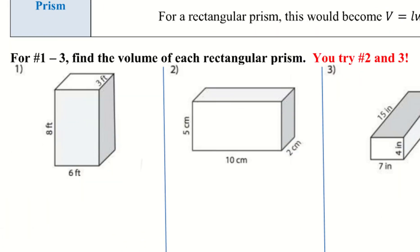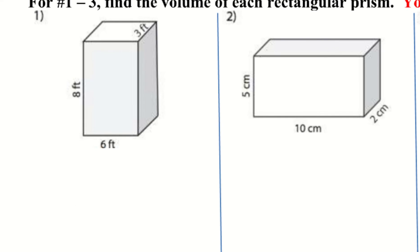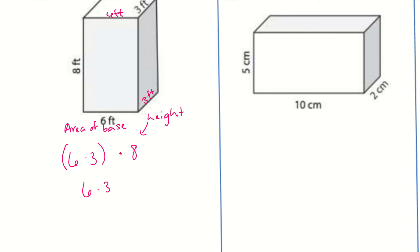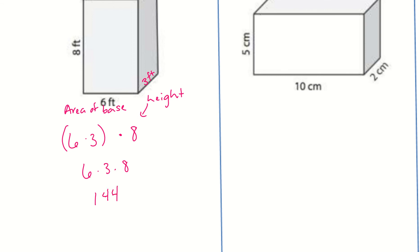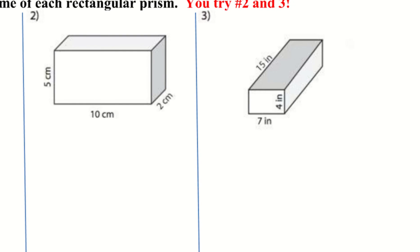I'm going to try number one and you'll look at two and three. The bases are top and bottom, so this is three feet and six feet. Area of the base is 6 times 3, then we multiply by the height of 8: 6 × 3 × 8 = 144. The unit is feet cubed, so 144 feet cubed.